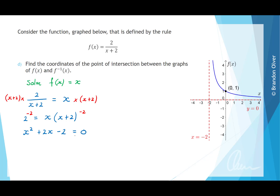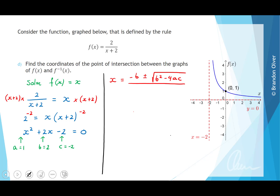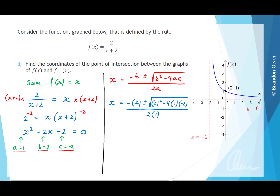We cannot factorize easily by inspection, so we use the quadratic formula with a equals 1, b equals 2, and c equals negative 2. The formula is x equals minus b plus or minus the square root of b squared minus 4ac, all divided by 2a. Substituting in gives x equals minus 2 plus or minus the square root of 2 squared minus 4 times 1 times negative 2, divided by 2 times 1. Simplifying gives x equals minus 2 plus or minus the square root of 4 plus 8, which is 12, divided by 2.